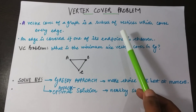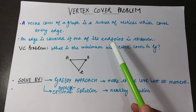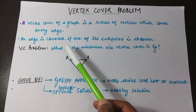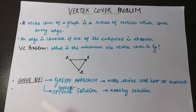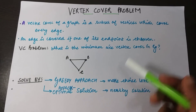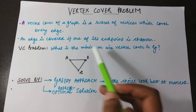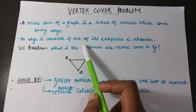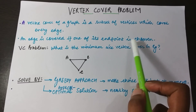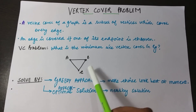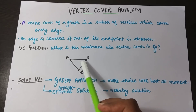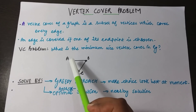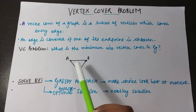Second, it's a subset of vertices — we have to figure out a set of vertices from this graph. Third, it covers every edge. An edge in a graph is said to be covered if one of its endpoints is chosen. For example, edge AB is said to be covered only if one of its endpoints, A or B, is chosen.